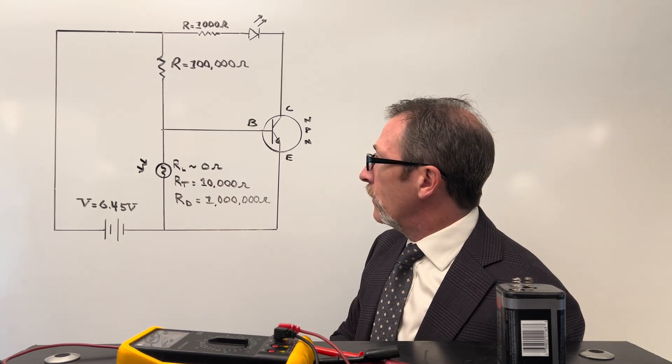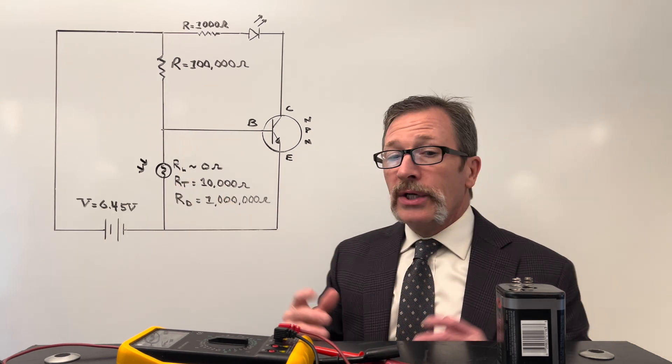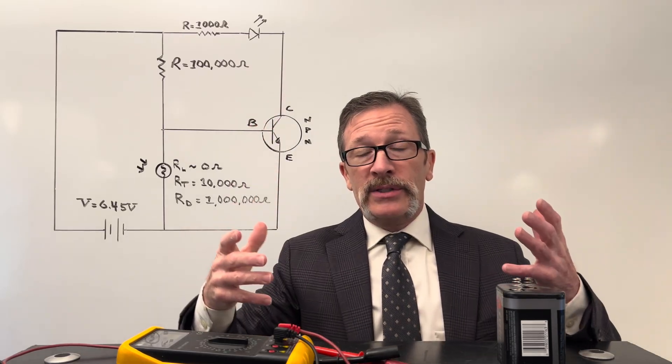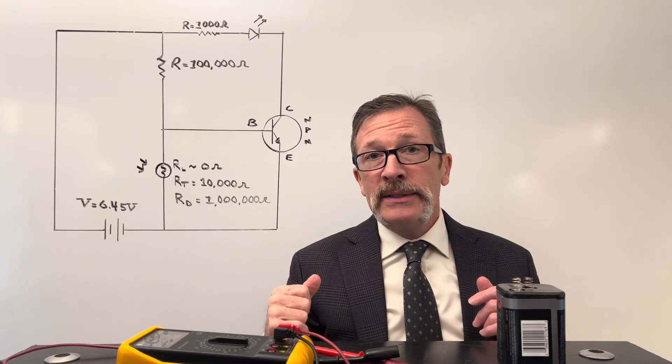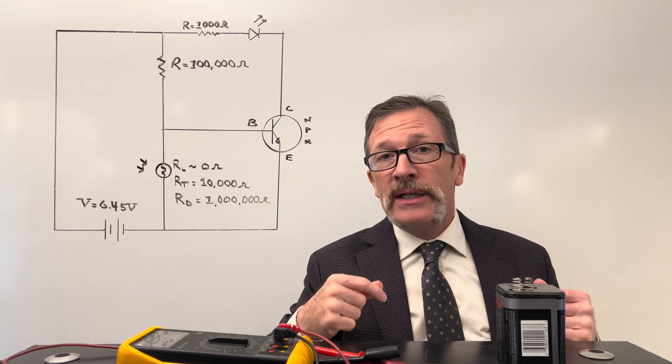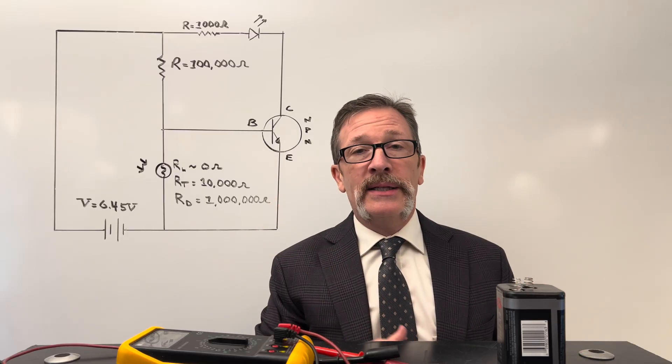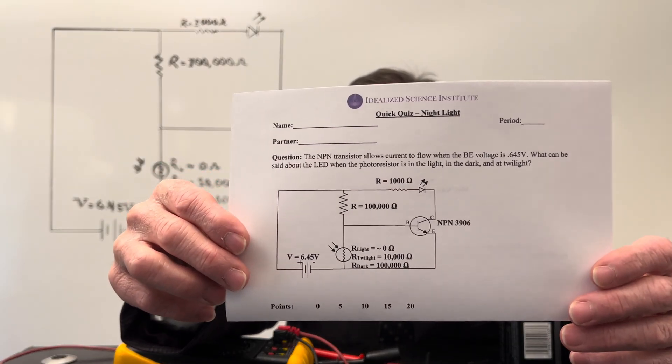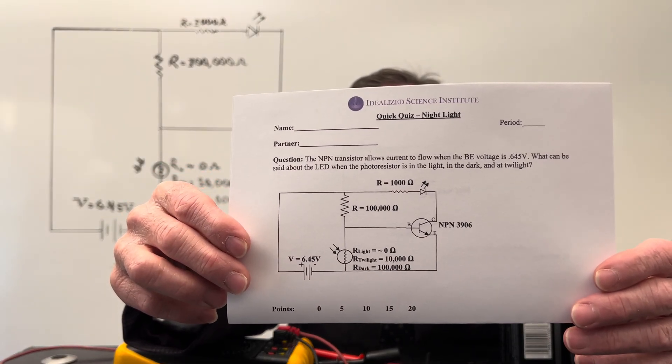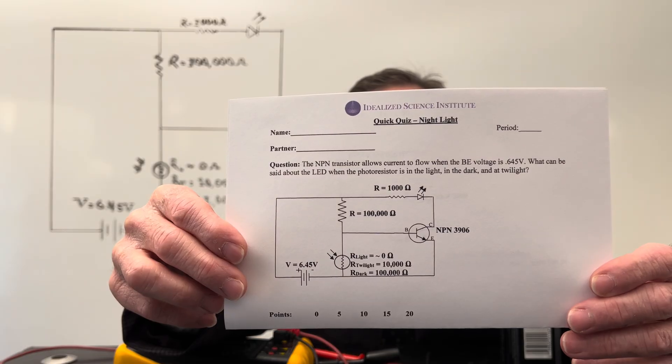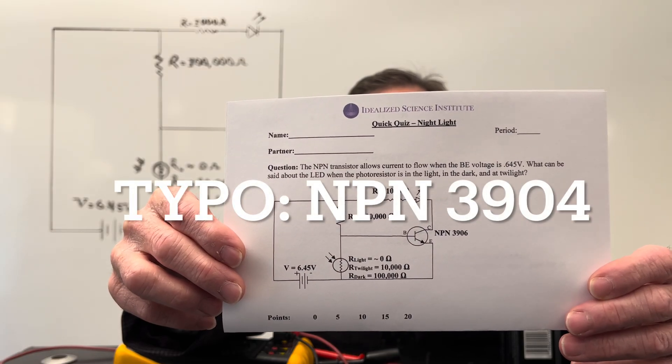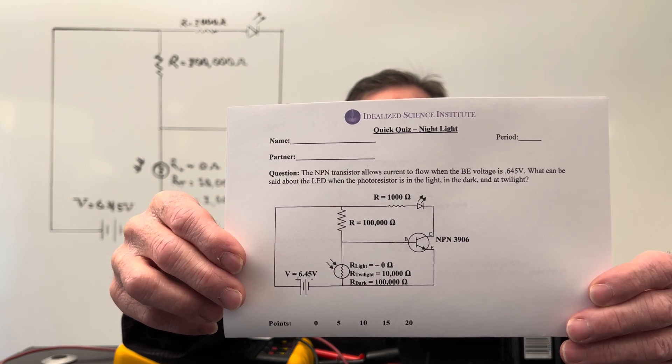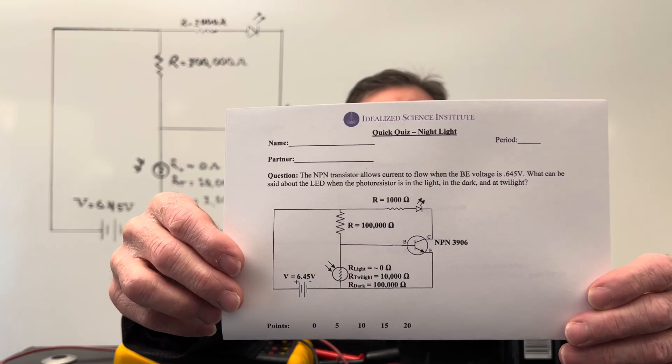And here we've got our photoresistor. So our question is what's going to happen to the LED if we have this circuit outside and it's in the sun, and then as the sun starts to set and we have twilight and then finally in the dark. The NPN transistor allows current to flow when the base emitter voltage is 0.645 volts. What can be said about the LED when the photoresistor is in the light, in the dark, and at twilight.